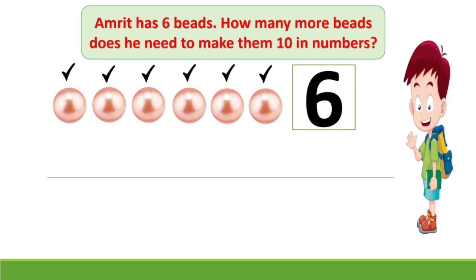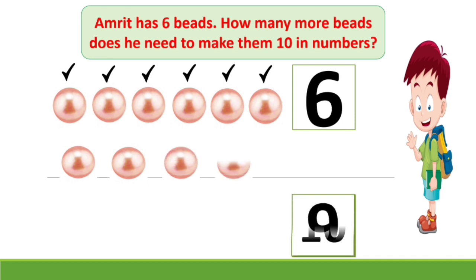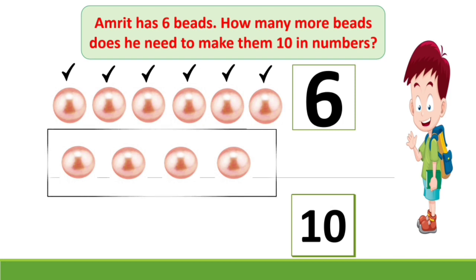He got 1 more, it becomes 7. Then he gets 1 more bird, now he has 8 birds. He got 1 more, now he has 9 birds. He got 1 more, now he has 10 birds. Kids, if he gets 4 more birds, then he has 10 birds in number.